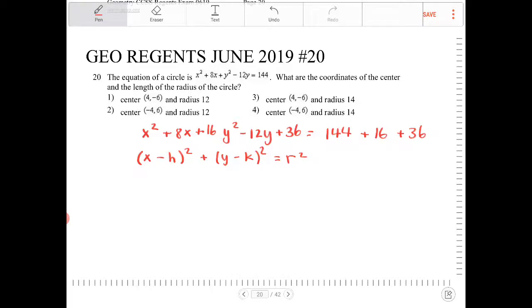So if you look at the left-hand side right now, x squared plus 8x plus 16, that is a perfect square. And that factors into x plus 4 squared plus y minus 6 squared equals...